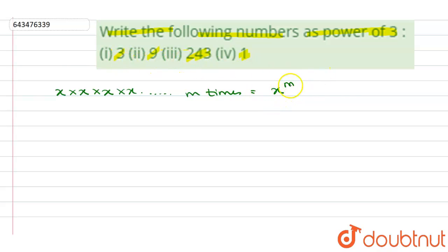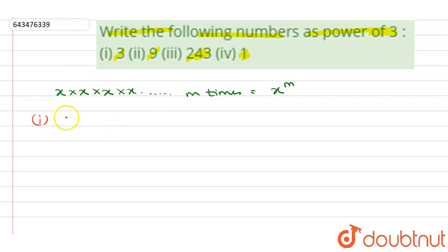Using this property, we can express these numbers as a power of three. Three equals three, so three is used here one time. Since three appears one time, the first number three can be represented as three power one.